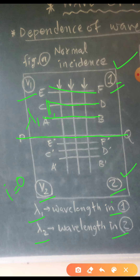After refraction, three wavefronts are indicated by A dash B dash, C dash D dash and E dash F dash, and the distance between any two wavefronts is lambda 2. Let wavefront AB reach the boundary PQ at time t equal to 0. When this wavefront AB is at the position of PQ, then CD will reach PQ after time T.